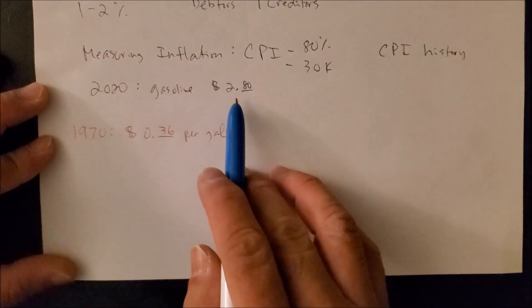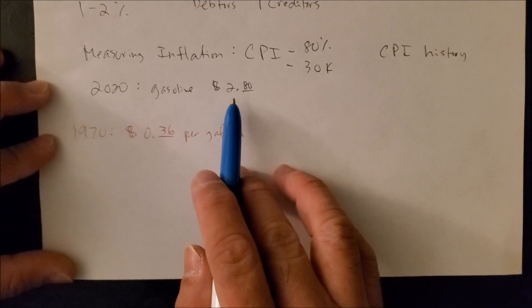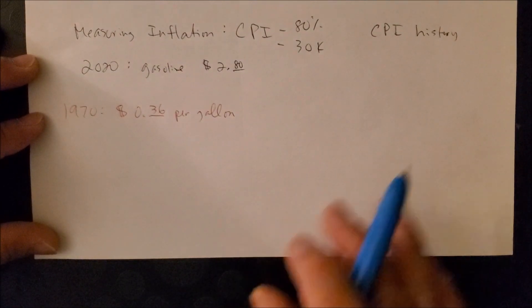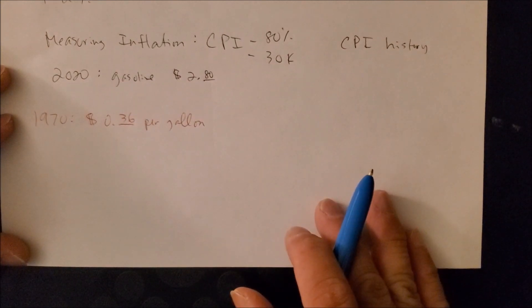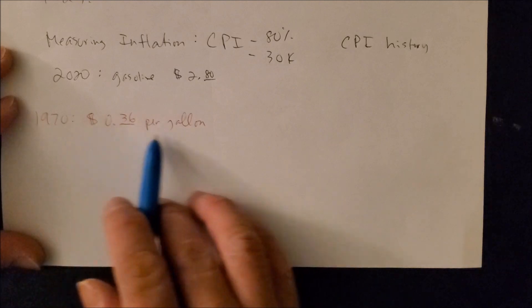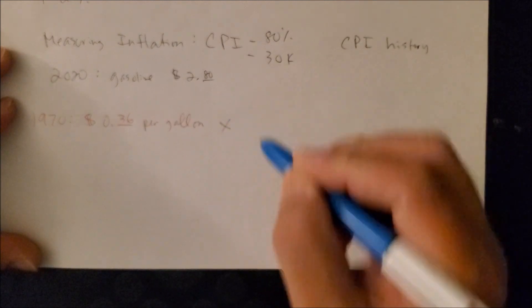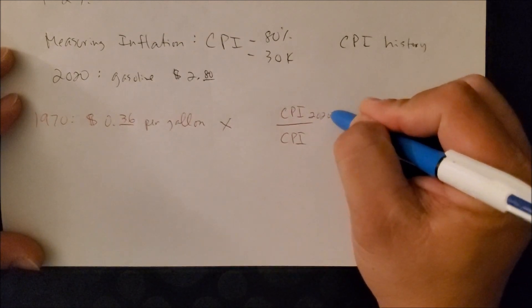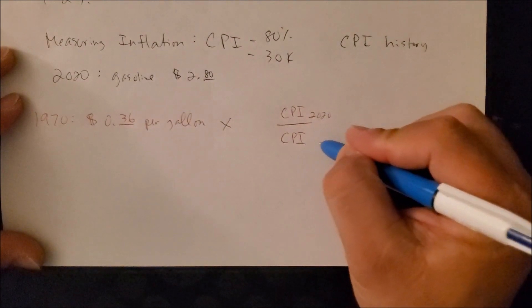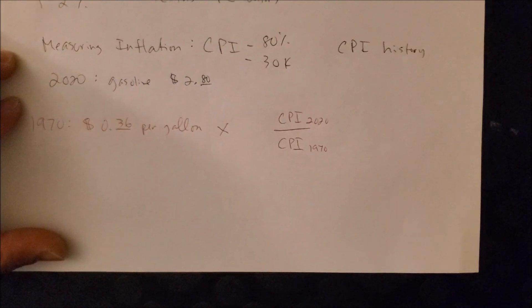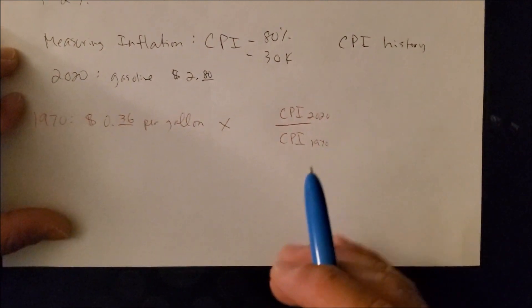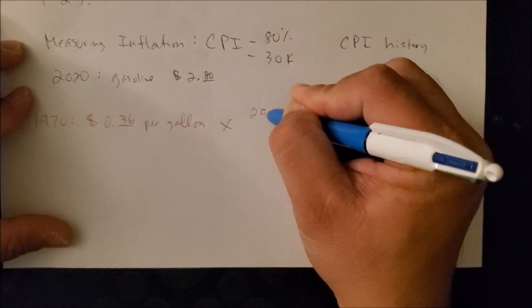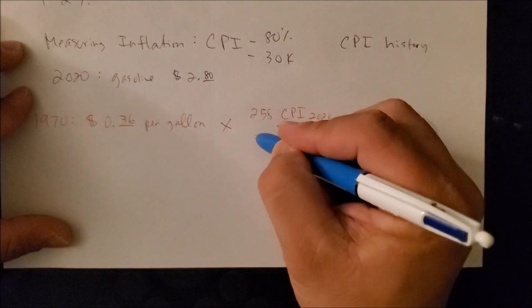We're trying to ask the question, are we paying over, just about right, or under with gas prices today? So in order to be able to know that, we have to use a CPI to calculate what the price should be based on inflation. So here we're going to use 1970 at 36 cents per gallon. We're then going to multiply this with the CPI of today, 2020, on the numerator and CPI of 1970. So based on the CPI history, that website that gives us the index, the CPI of 2020 is around 258 and the CPI of 1970 is about 38.